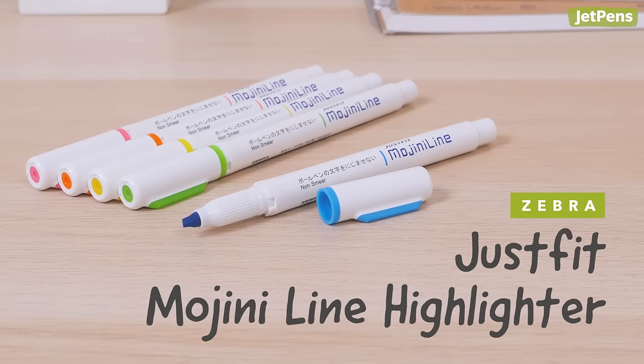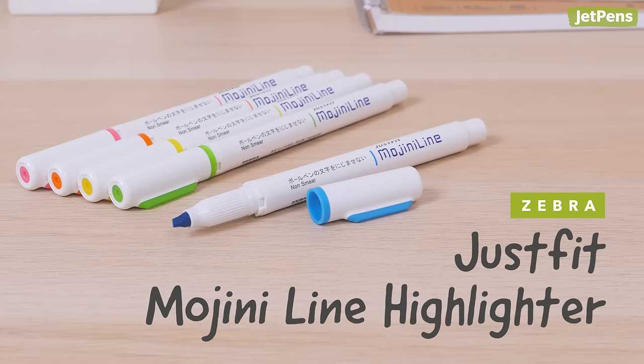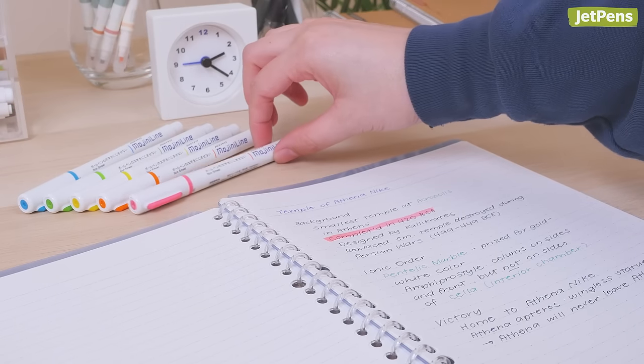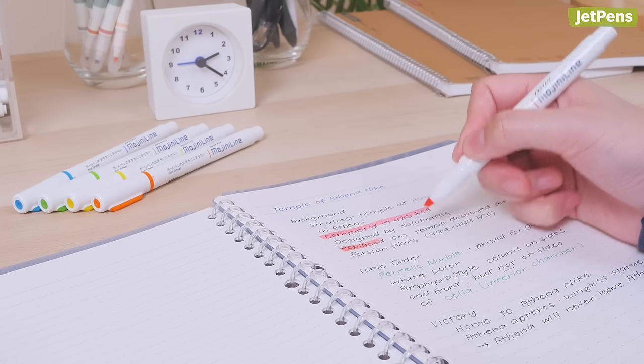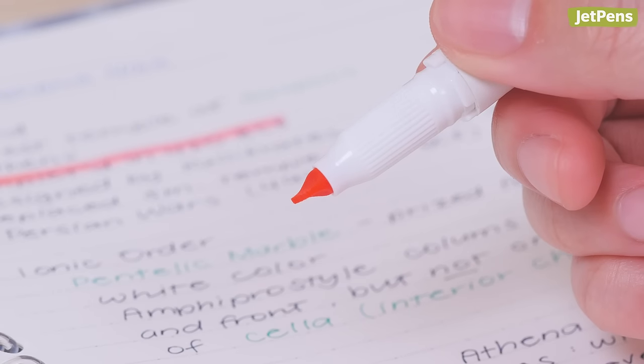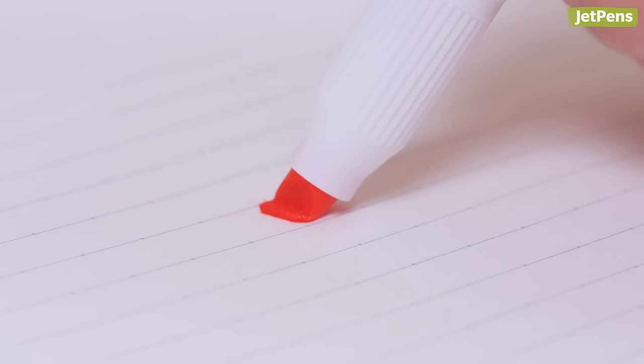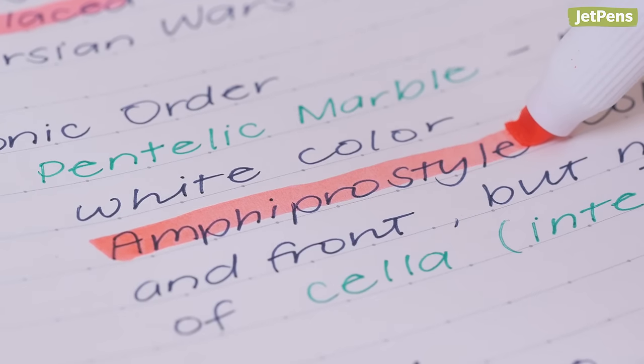If you want a smear-free highlighter, the Zebra Just Fit Mojini Line Highlighter is just what you need. It uses a special ink formula that binds with ballpoint and gel ink, which keeps it from smudging when highlighting. What's more, the chisel tip flexes to make perfect contact with the page, so you'll have neat lines without having to hold the marker at the perfect angle.